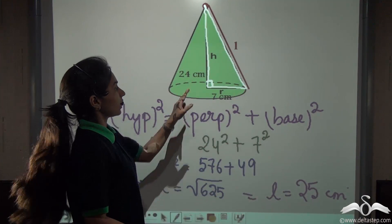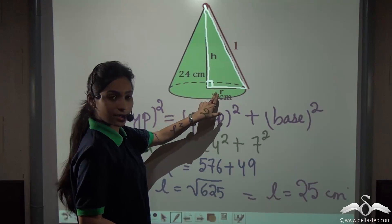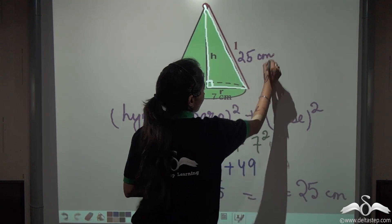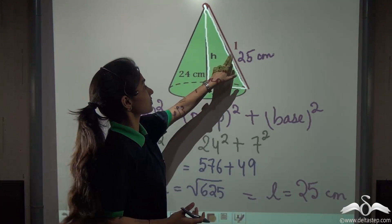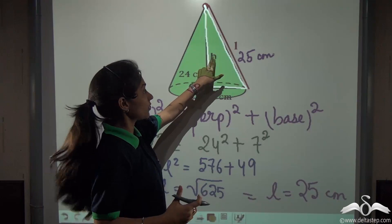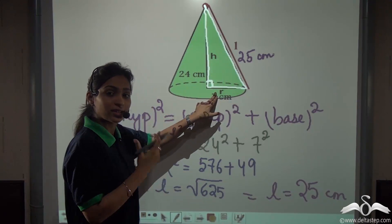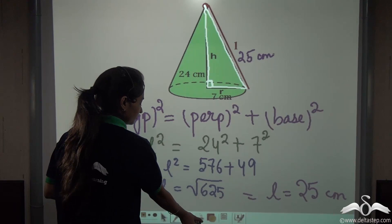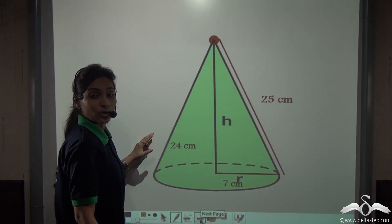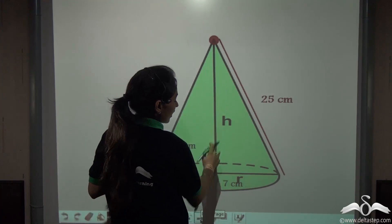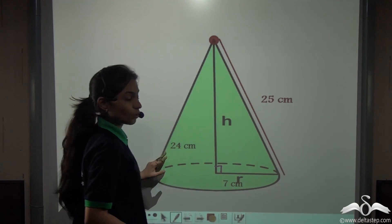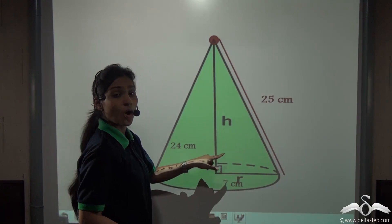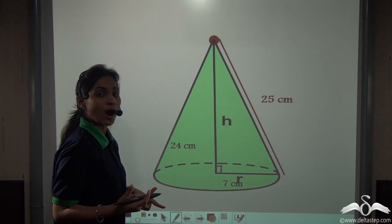Now you know that if you are given the height and the radius, you can find the slant height. If you are given the slant height and the height, or the slant height and the radius, you can find the third dimension easily using the Pythagoras theorem. This cone has a right angle, so you can find any one of the three dimensions — slant height, height, or radius — with the help of the other two.